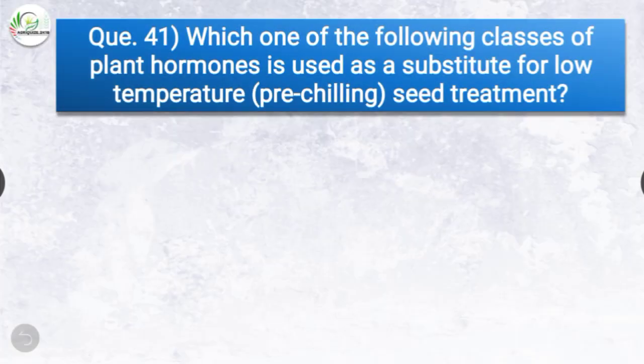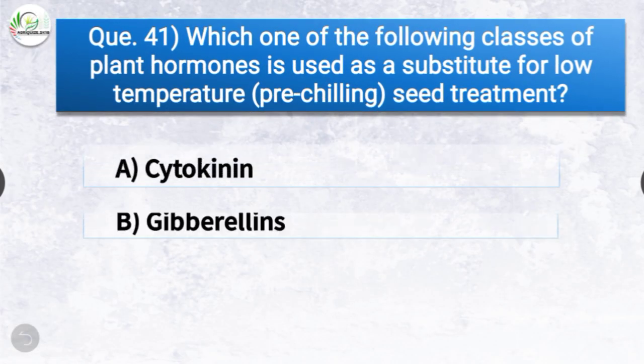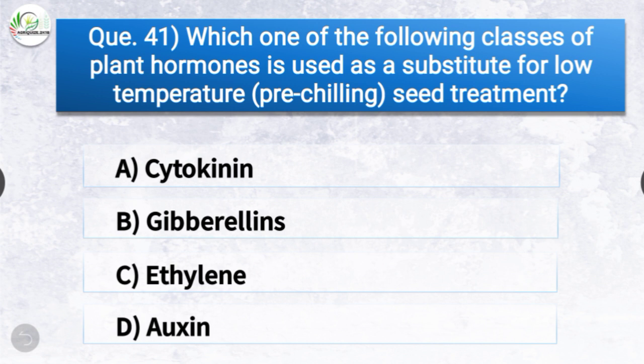Question number forty-one: Which class of plant hormones is used as a substitute for low temperature pre-chilling seed treatment? The options are cytokinin, gibberellins, ethylene, or auxin. The correct answer is option D — auxin. Auxin is the class of plant hormone used as a substitute for low temperature pre-chilling seed treatment.